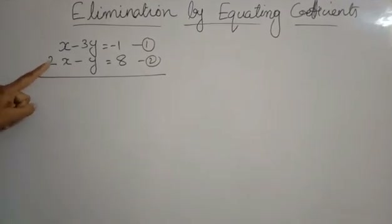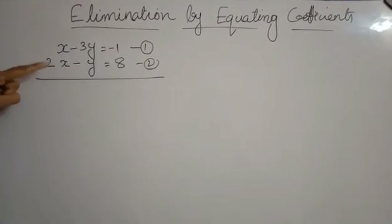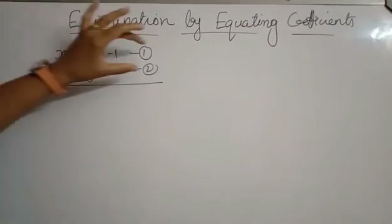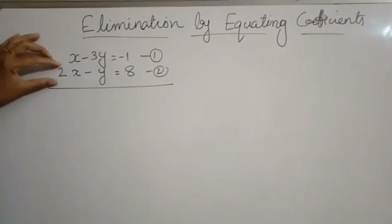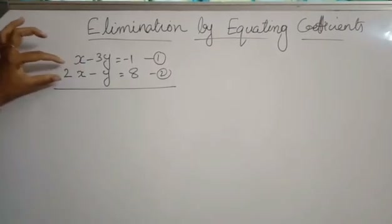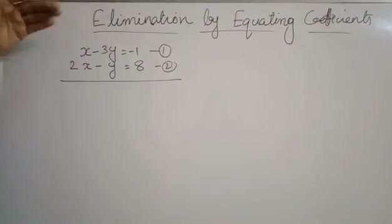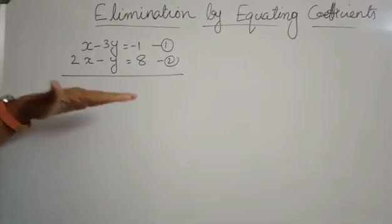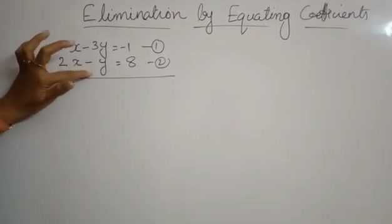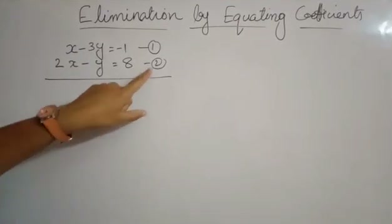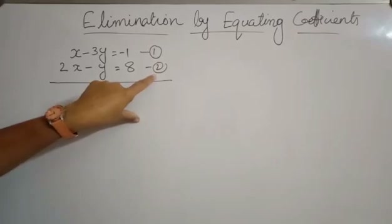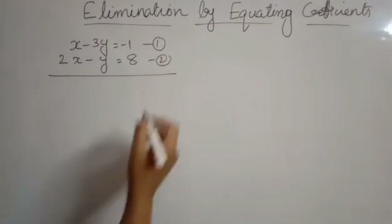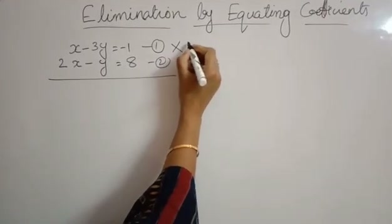Here, let's make the coefficient of x equal in both equations. We need to multiply the first expression by the number 2, since the coefficient of x in the second equation is 2. If the coefficient was some other number, we would multiply by that number. In case you want to make the coefficient of y the same instead, you would multiply equation 2 by the number 3. Here, let's make the coefficient of x the same.